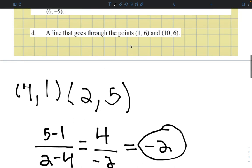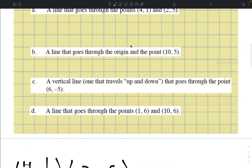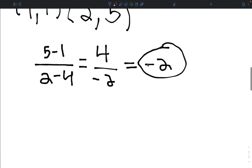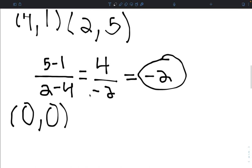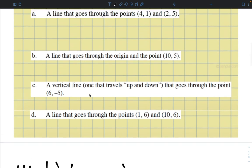Alright, let's go to our next example. A line that goes through the origin and the point (10, 5). So the origin, whenever a problem says origin, they mean (0, 0), which is the middle of the graph. So our first point is (0, 0) and our second point is (10, 5).